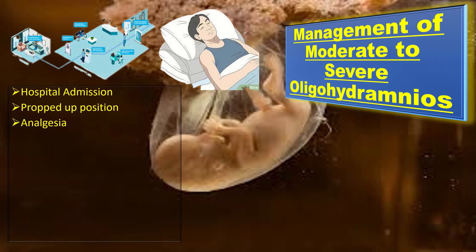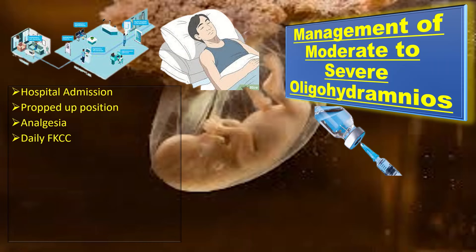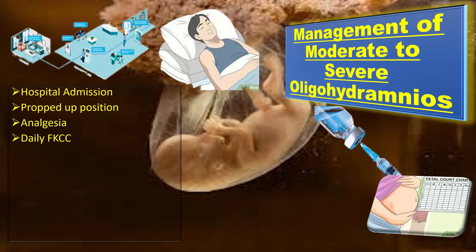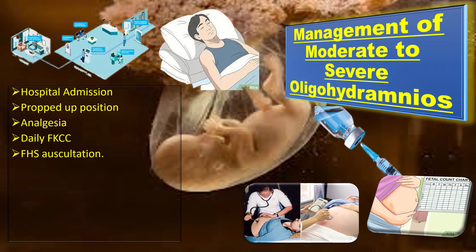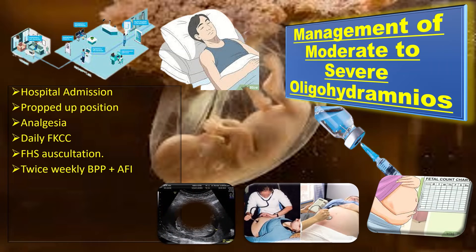We should consider analgesia if required. Daily fetal kick count chart (FKCC) is used for assessment of fetal movements. Twice daily fetal heart sound auscultation is performed. Twice weekly biophysical profile plus AFI assessment is done, along with growth scans every two to three weeks.